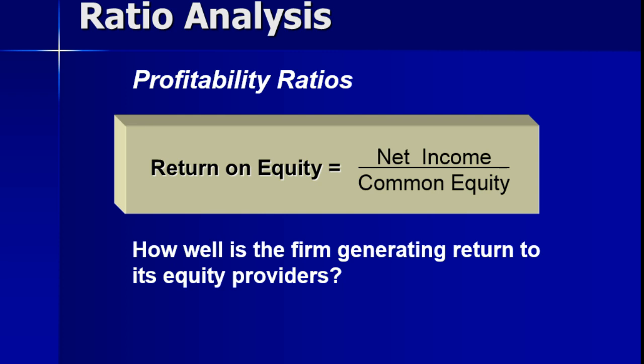Return on equity looks at the equity portion. Equity is the amount of money you own in the business. Assets equal liabilities plus equity. Liabilities are the money you owe to other people, and equity is the money you brought to the business — your piece of what you really own. For example, if you bring $100,000 cash and pay for 100% of your business without borrowing, and you make $25,000 that year in net income, you have a return on equity of 25%.